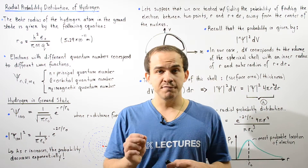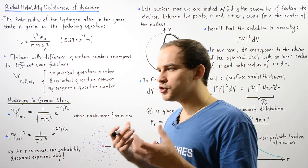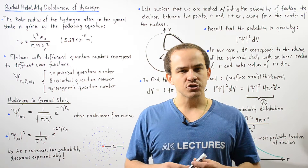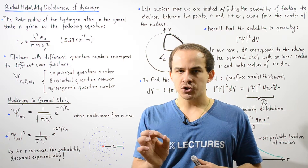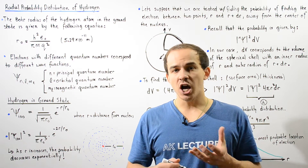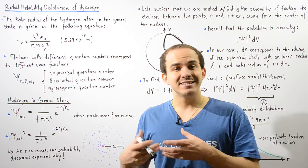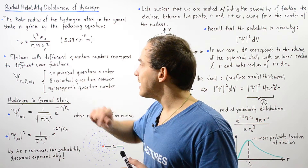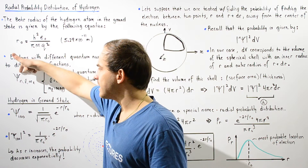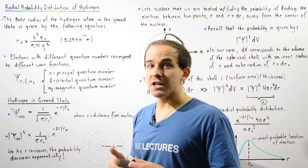This Bohr radius will become important when we define the wave function of the electron in the ground state of the hydrogen atom. The first three quantum numbers determine what the wave function will actually look like — they determine the shape, size, and orientation of the electron cloud produced by that electron. Electrons with different quantum numbers correspond to different wave functions, so whenever we specify the wave function psi we also have to specify the first three quantum numbers.